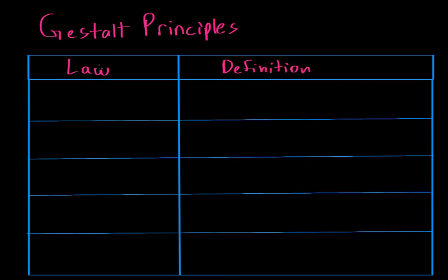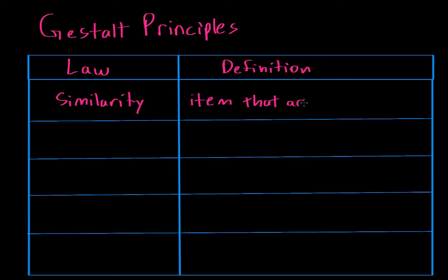The first Gestalt Principle is the law of similarity. The law of similarity basically says that items that are similar to one another are grouped together by your brain. So what does this mean? Let's look at an example.